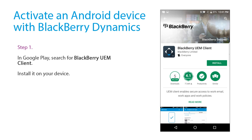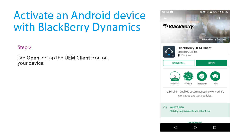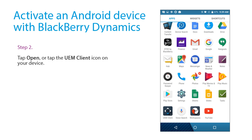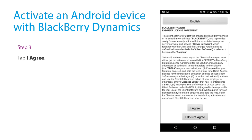In Google Play, search for BlackBerry UEM Client and install it on your device. Tap Open, or tap the UEM Client icon on your device. Tap I Agree to accept the end user license agreement.